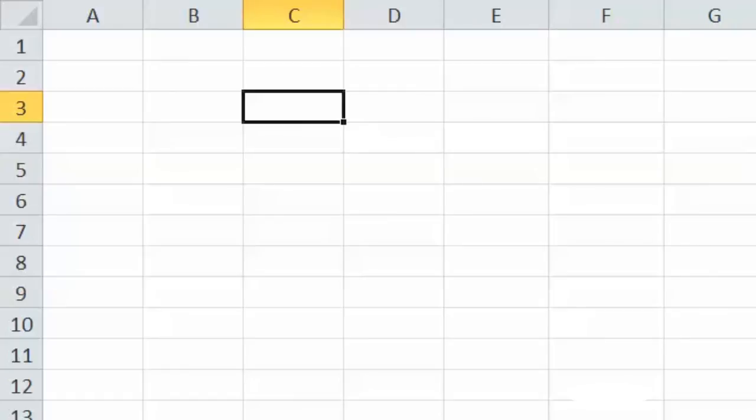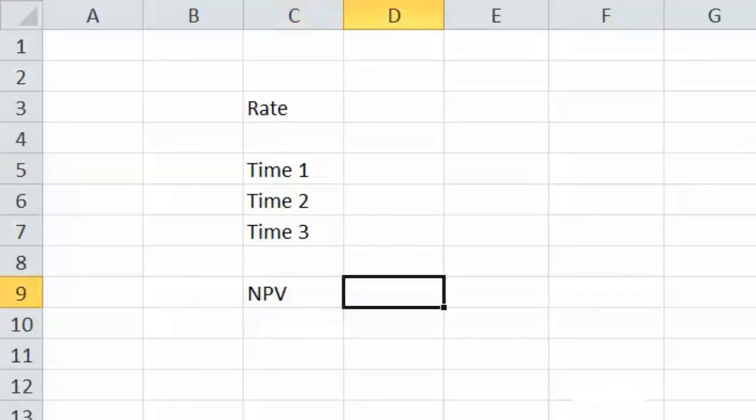So what we have here is, we put in the rate, between time one, time two, time three, and net present value. In rate, we put 10%.